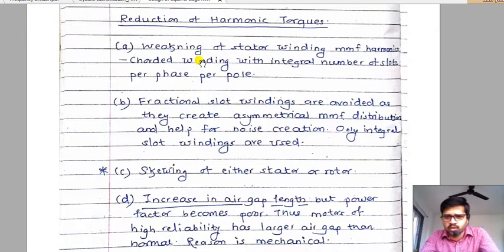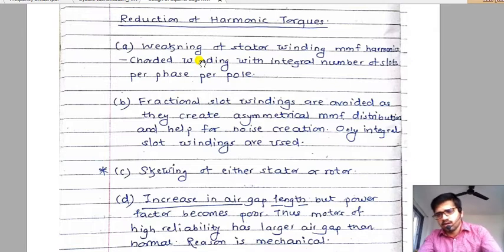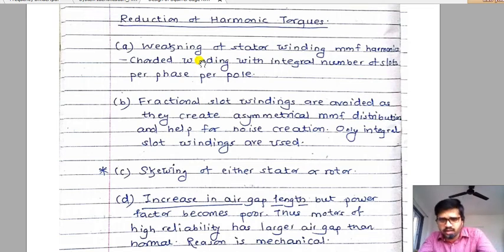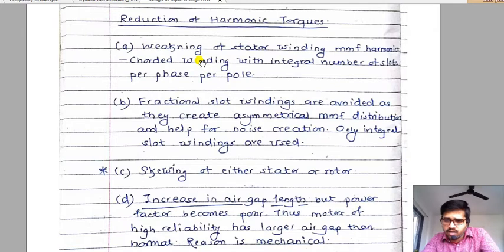The fourth solution is to increase the air gap length, which also controls harmonic torques. However, increasing the air gap increases magnetizing current, worsening power factor. This solution is only applicable to motors where higher reliability is required and a larger air gap is mechanically affordable. In summary: (1) corded winding, (2) integral slot winding to avoid fractional winding, (3) skewing, and (4) increasing air gap length.